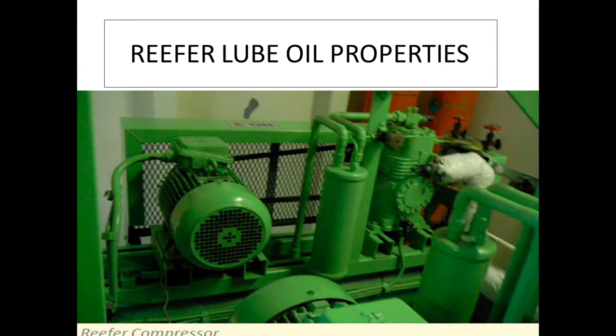Today we are going to discuss a very important machinery on ships: the refrigeration plant. The refrigeration plant is a very important and critical piece of equipment. All the perishable items stored in different rooms — like the meat room, fish room, and veg room — have different temperature compartments, and these temperatures are maintained by the refrigeration plant.